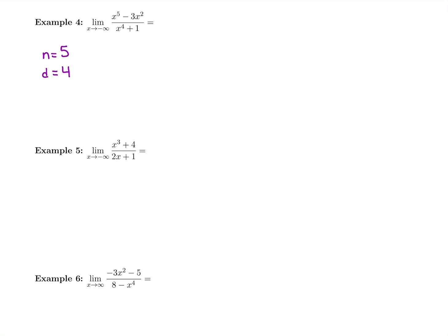So what case do we have here? We have top-heavy. Bottom-heavy is the best — the answer is always 0. This one's top-heavy, though. So we're going to divide every single term by x to the highest power in the denominator. I'm going to take x to the fifth and divide it by the highest power of x in the denominator, which is x to the fourth.